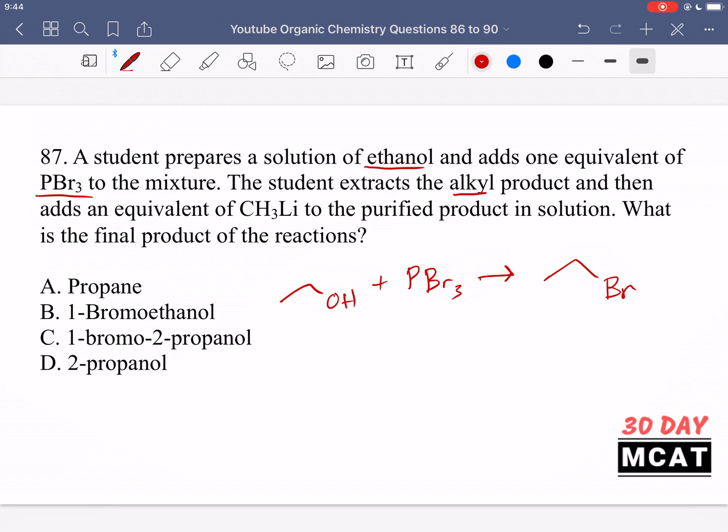The student took this alkyl product and reacted it with this organolithium. What this does is essentially we have this CH3-Li, we have this organolithium and it is a nucleophile. What we did is we converted our original alcohol into an electrophile which can undergo an SN2 type reaction, and then we get our final product where the bromide used to be, we now have addition of that new carbon, that new methyl group.